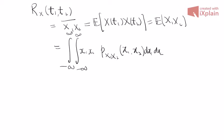To compute the autocorrelation function, you need at least the joint PDF at two time instants.